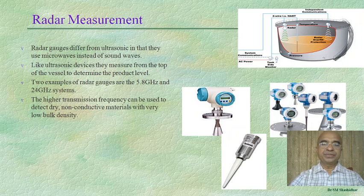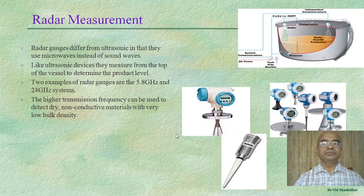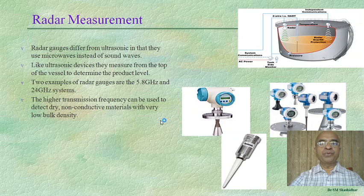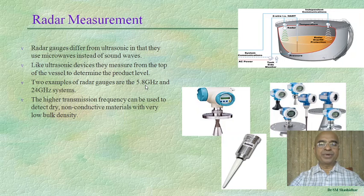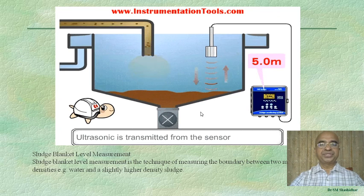Radar measurement uses a similar technique. Radar gauges differ from ultrasonic in that they use microwaves instead of sound waves. The principle is similar to the ultrasonic wave method, but here microwaves of the order of 5.8 GHz or 24 GHz are used.